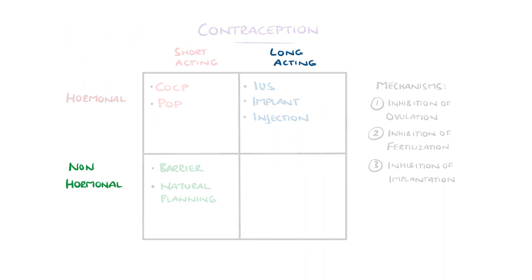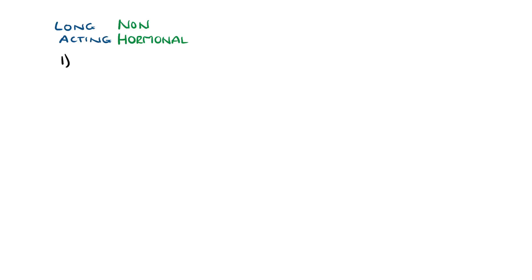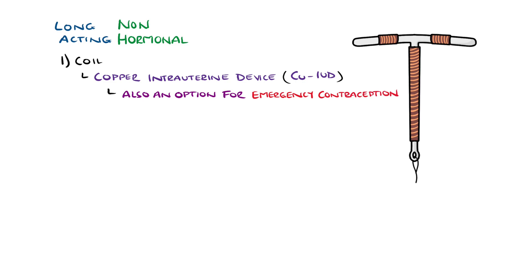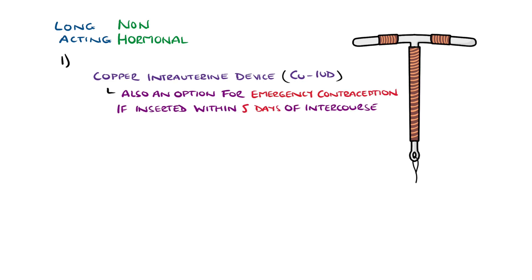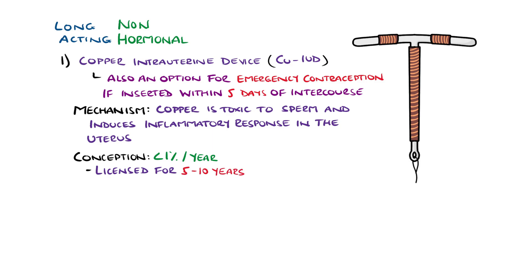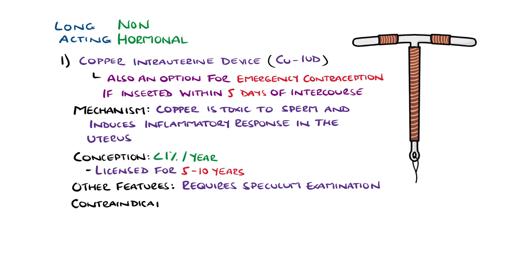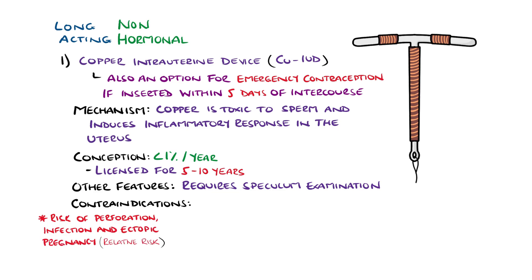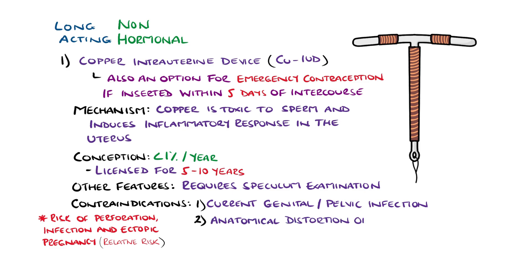For long-acting non-hormonal contraception, the main example is the copper coil, also known as the copper intrauterine device. It is also an option for emergency contraception when inserted within five days of unprotected intercourse. Its mechanism is that copper is toxic to sperm, and the coil can induce an inflammatory response within the uterus, preventing implantation. Conception rates with the copper IUD are under 1% per year, and depending on the type, they are licensed for between 5 and 10 years. A speculum exam is needed to fit and remove it, featuring a small risk of perforation and infection. If pregnancy does occur, it is more likely to be ectopic, and this risk is greater than with the Mirena coil. General contraindications include current pelvic infection or anatomical distortion of the uterine cavity.